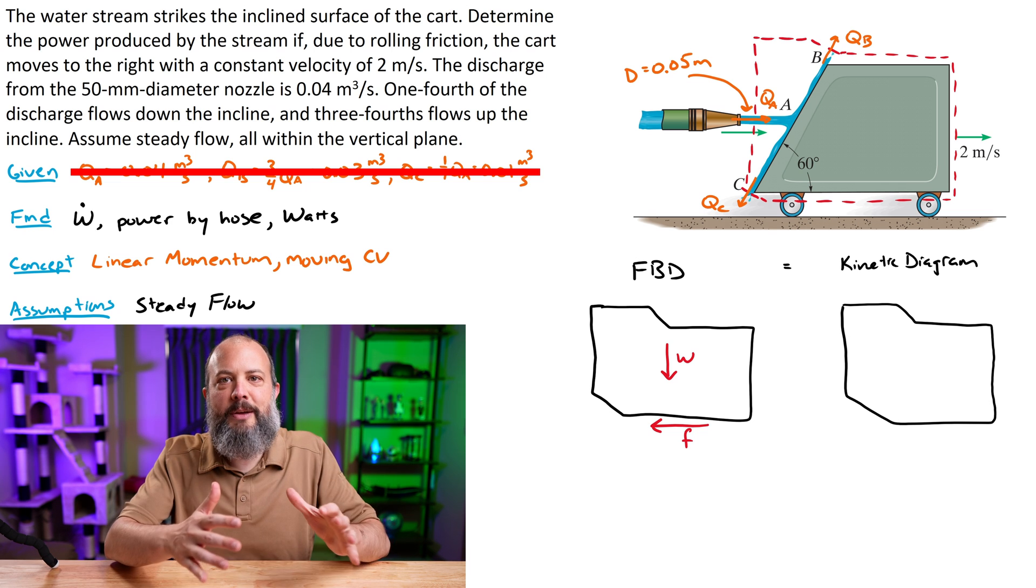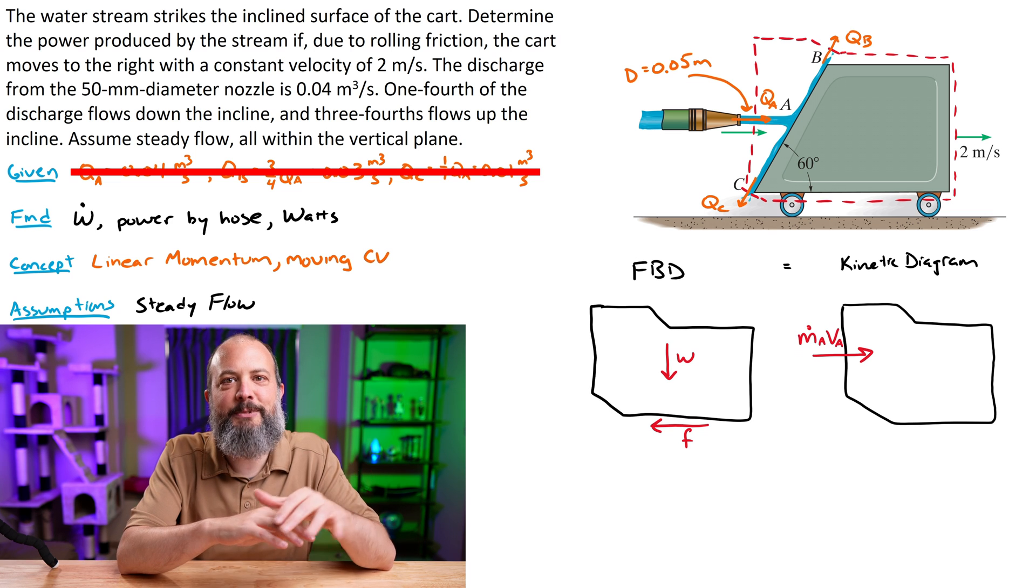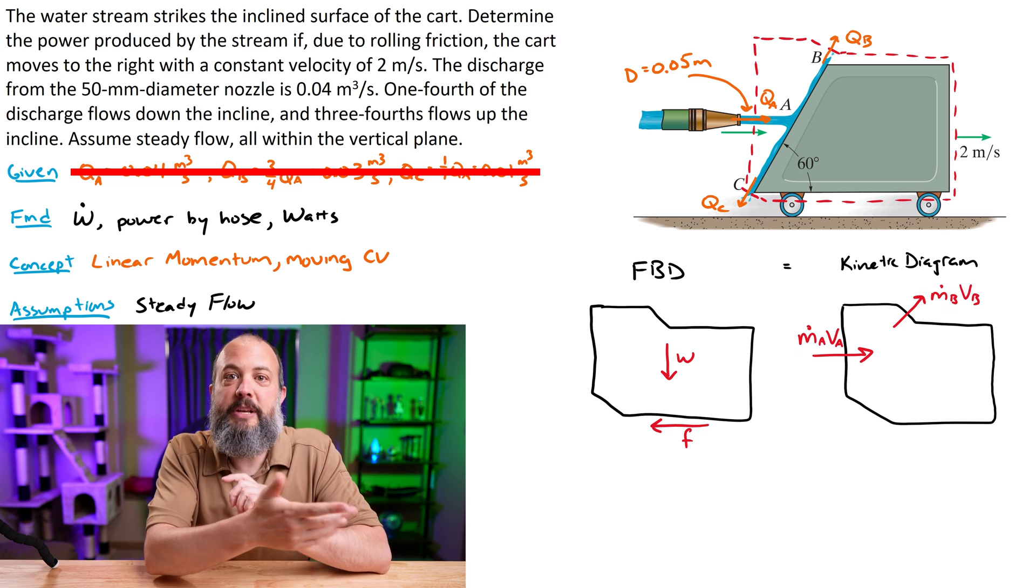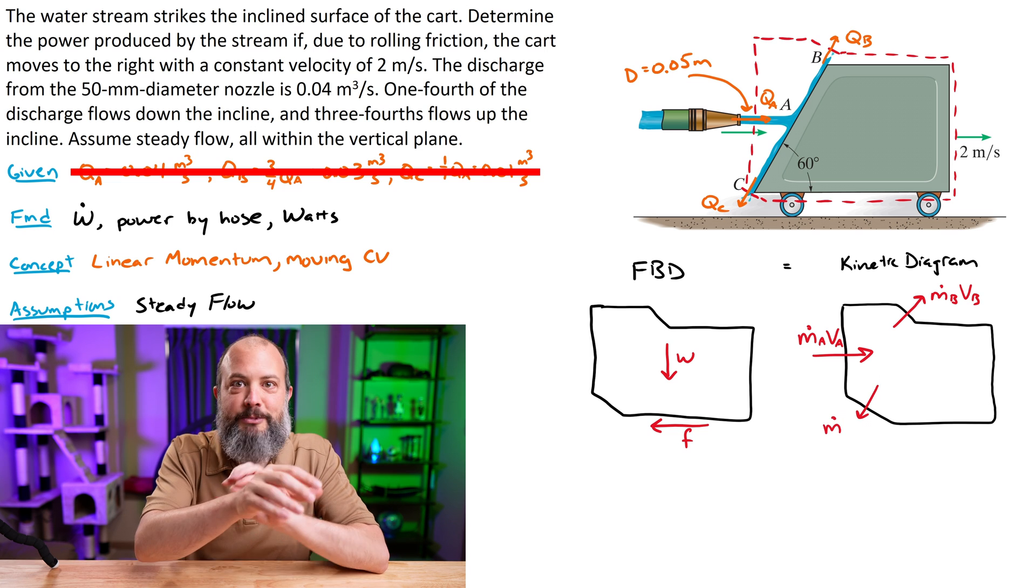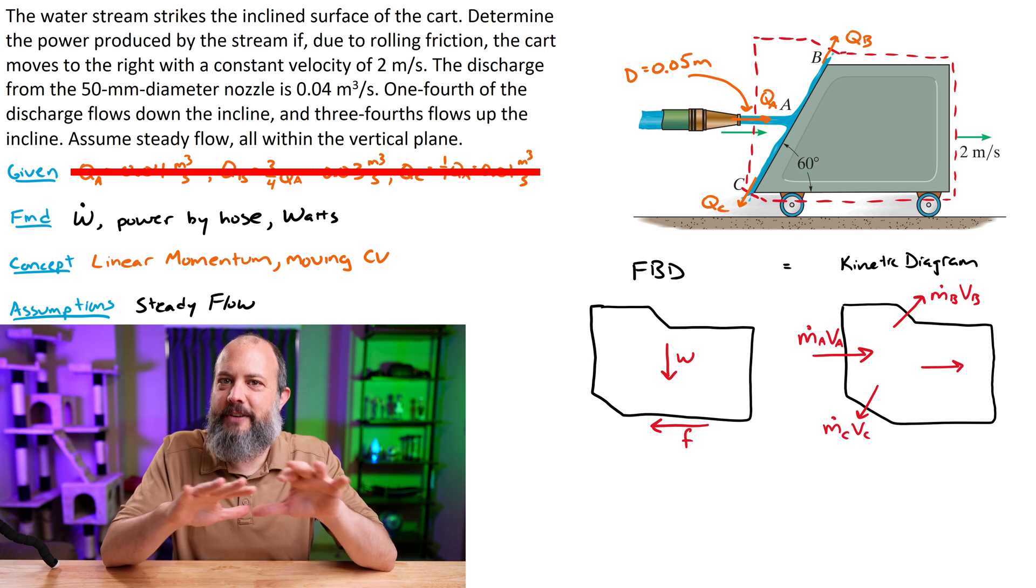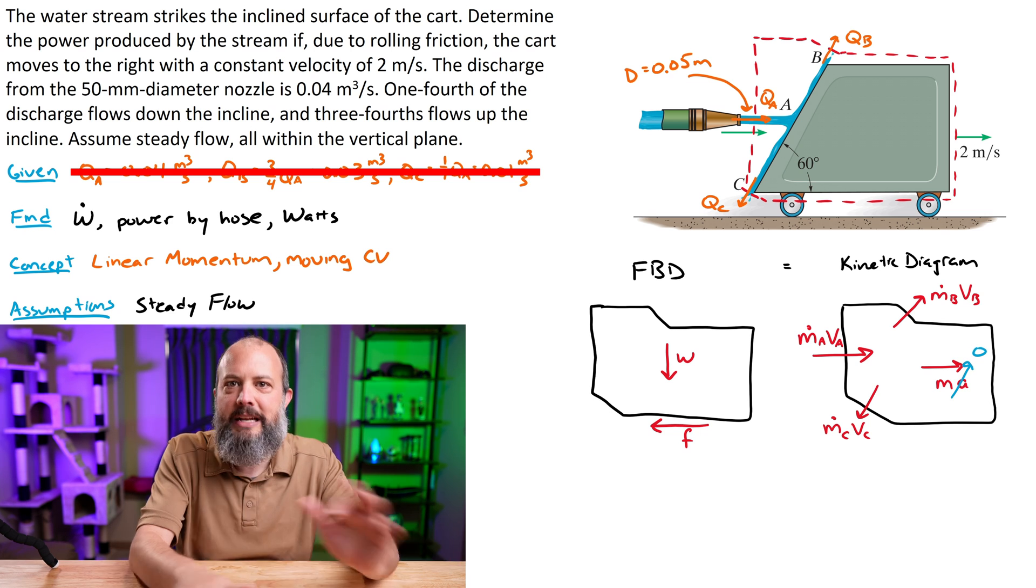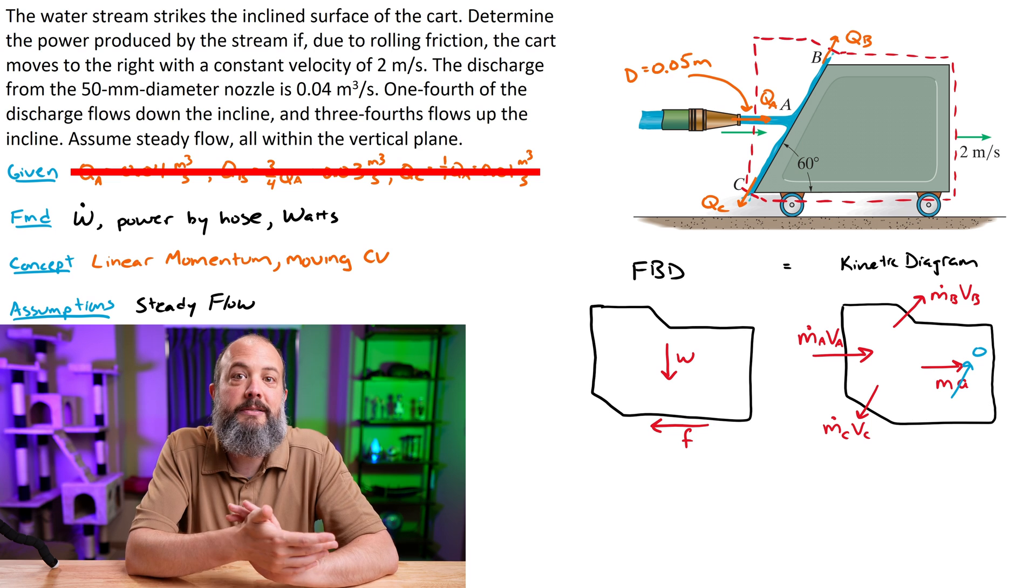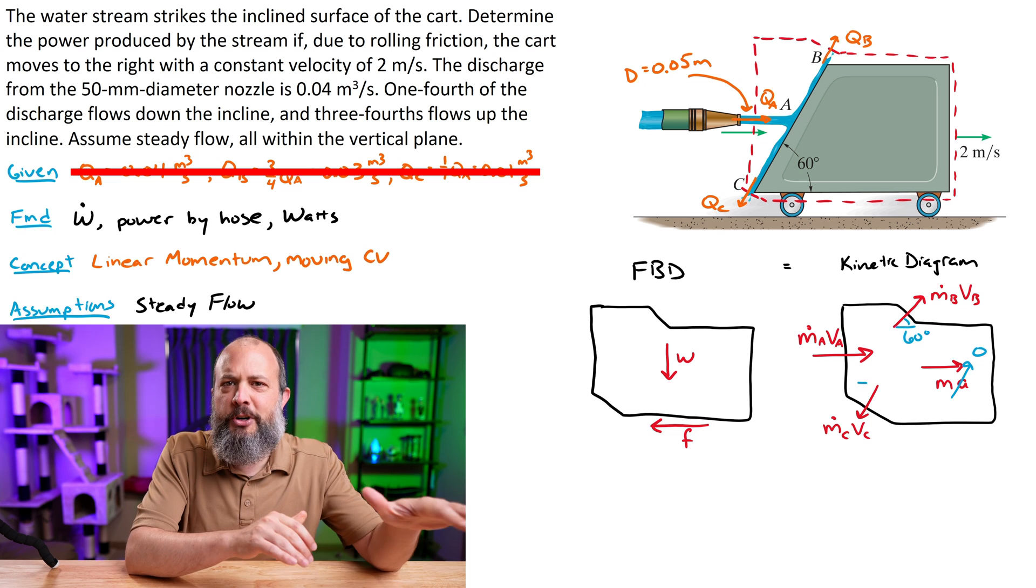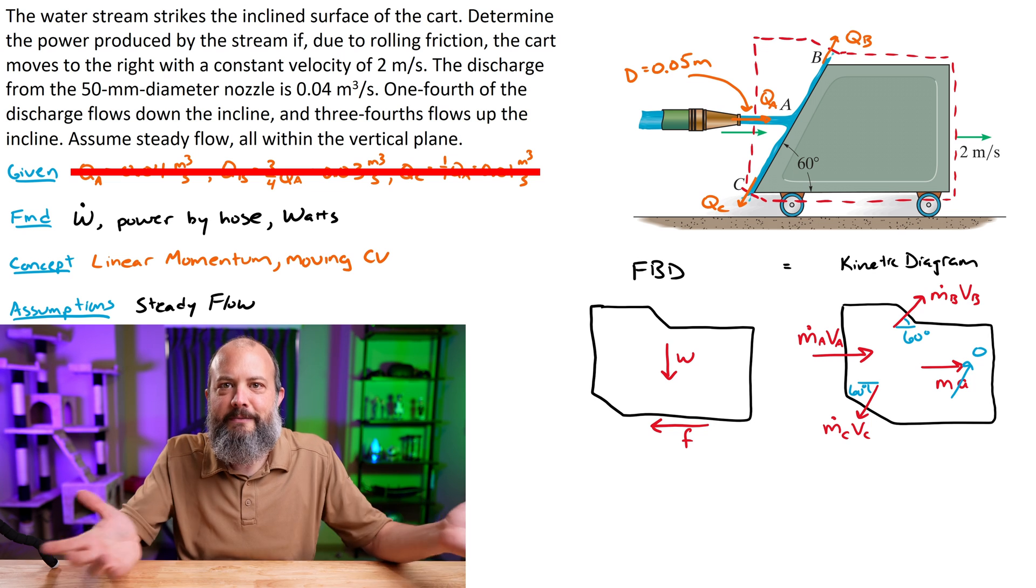Over on the kinetic diagram side, I've got fluid entering the system pointing to the right, M dot A times VA. I've got some fluid exiting up and to the right, M dot B VB, some fluid exiting down and left, M dot C VC. And the cart is moving at constant velocity. So I'm going to add my MA term just because I add it to every problem, but I'm immediately going to cross it off as zero because the control volume is not accelerating. So acceleration is zero. But I always put it on the drawing so I don't forget it in case there actually is an accelerating control volume.